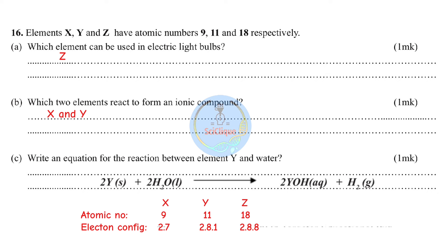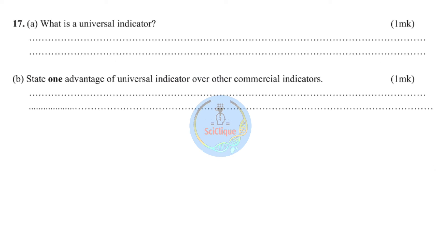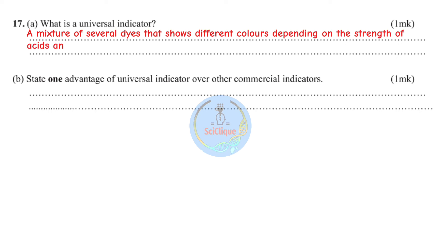Question seventeen part a: define universal indicator — a mixture of several dyes that shows different colors depending on the strength of acids and bases. Part b: state one advantage of universal indicator over other commercial indicators — it not only identifies whether a substance is an acid or base, but also indicates the strength of the acid or base.